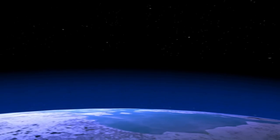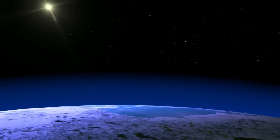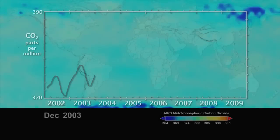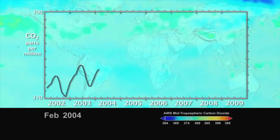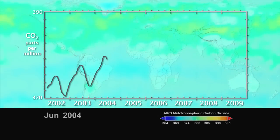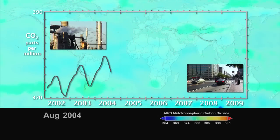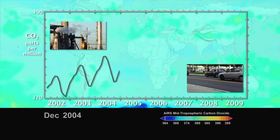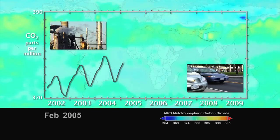Carbon dioxide is a naturally occurring gas in our atmosphere, and monitoring it is like watching our planet breathe. This animation shows the seasonal cycle of carbon dioxide and the increase of carbon dioxide every year due to human activity.